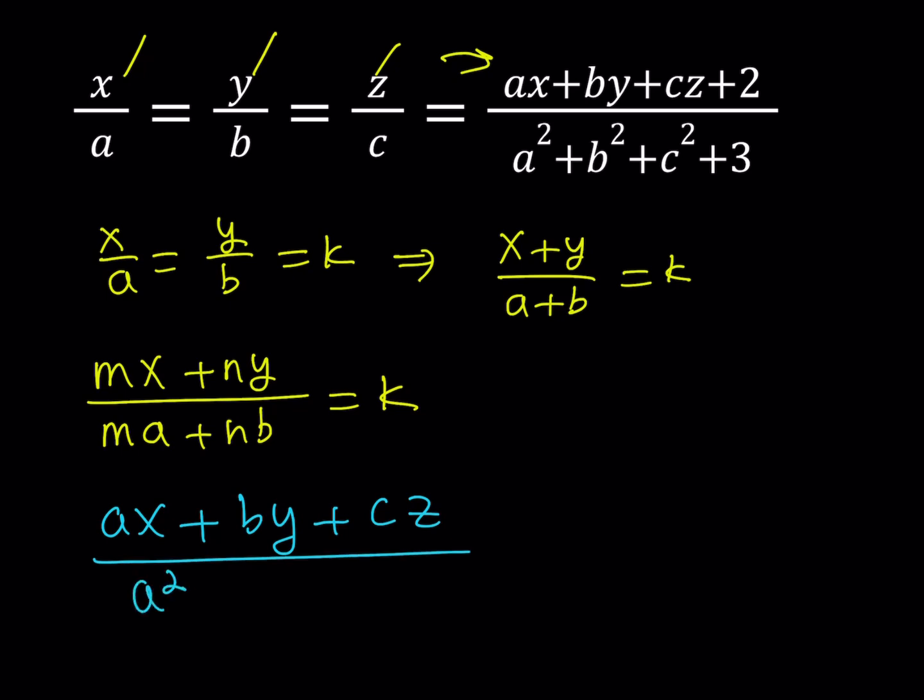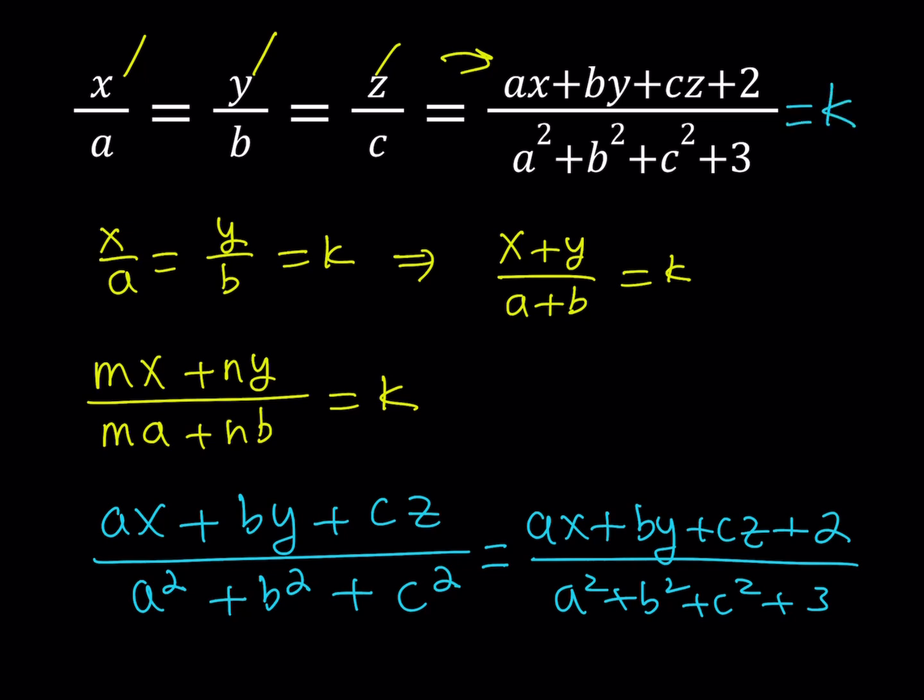At the bottom, a times a is a squared, b times b is b squared, and c times c is c squared. Notice that ax over a squared is still the same as x over a, so that ratio is not going to change. And this should equal ax plus by plus cz plus 2, all over a squared plus b squared plus c squared plus 3.